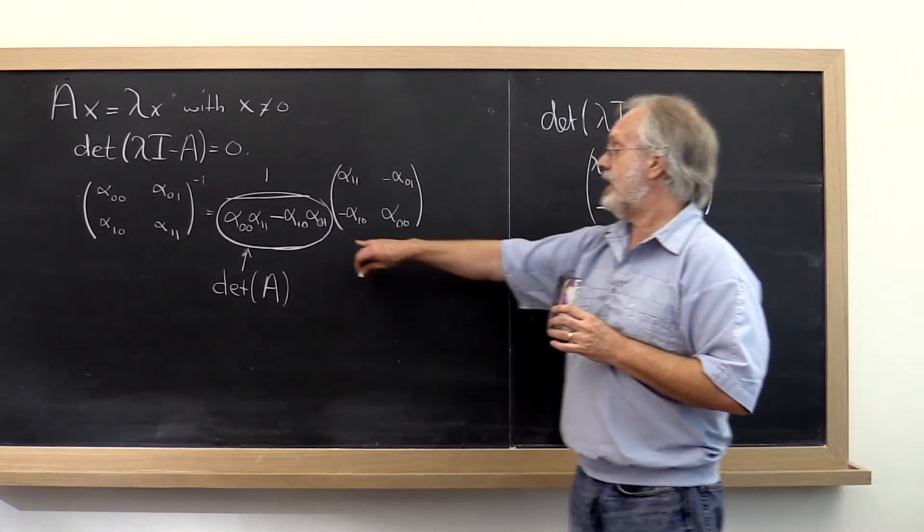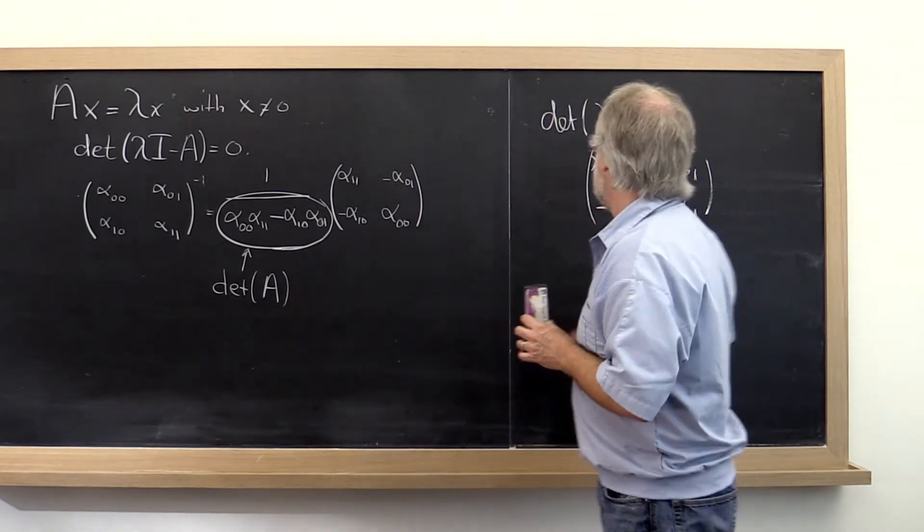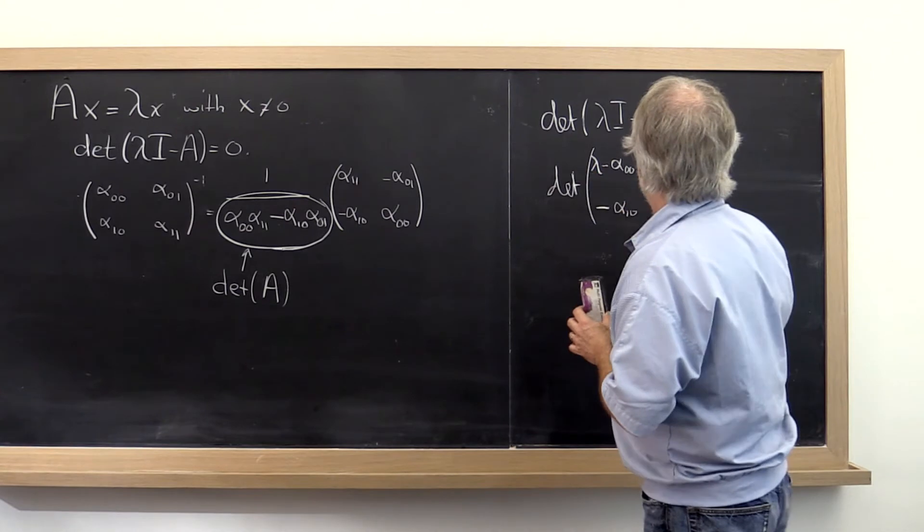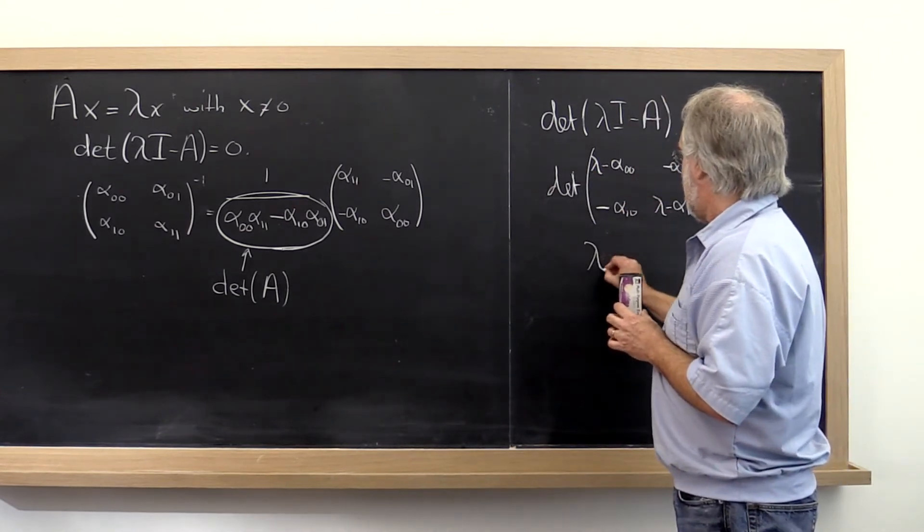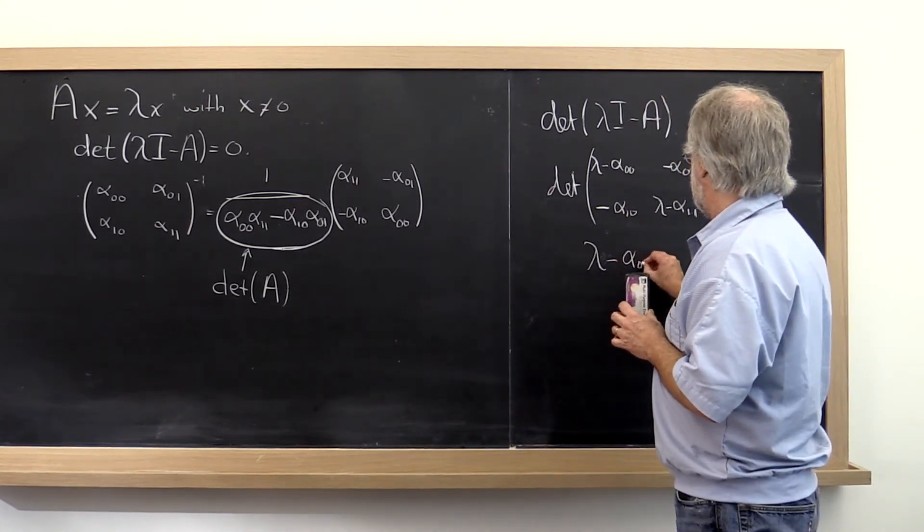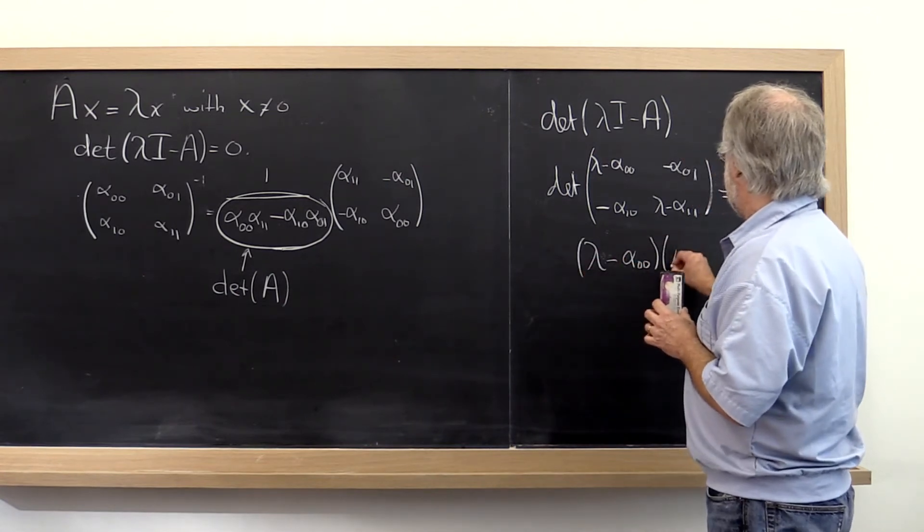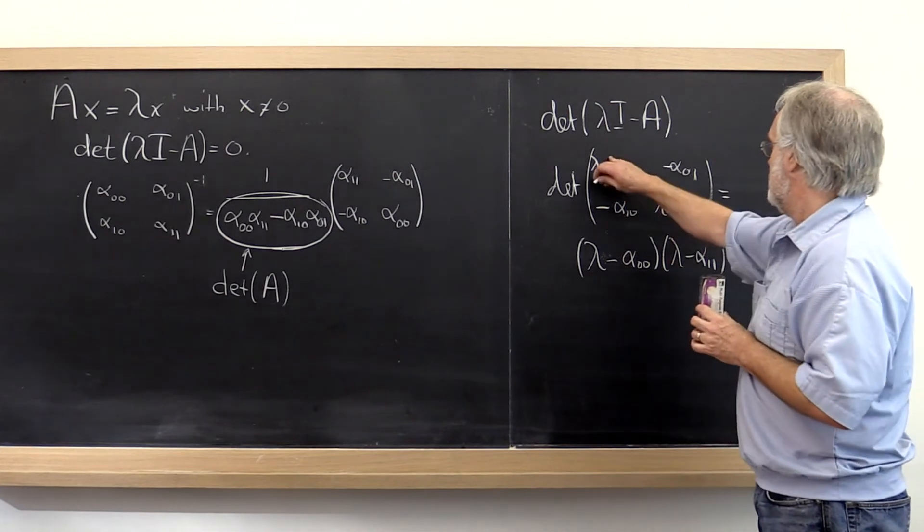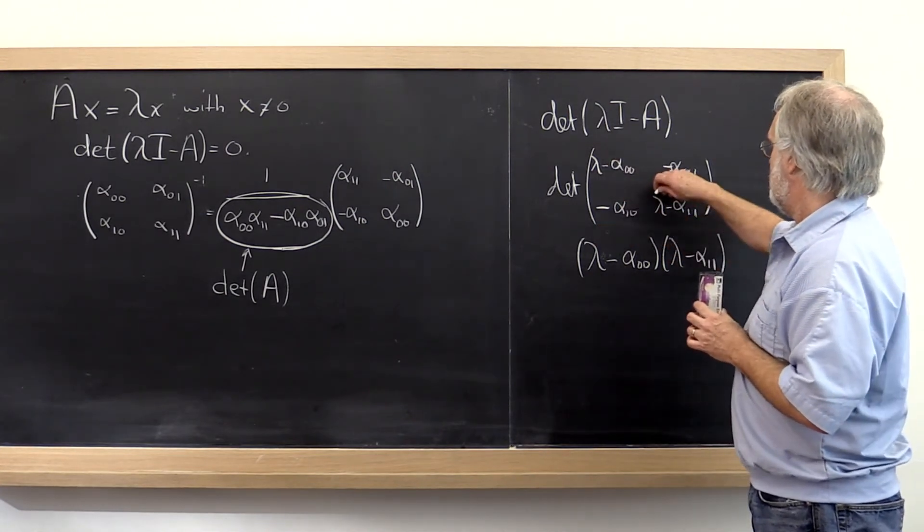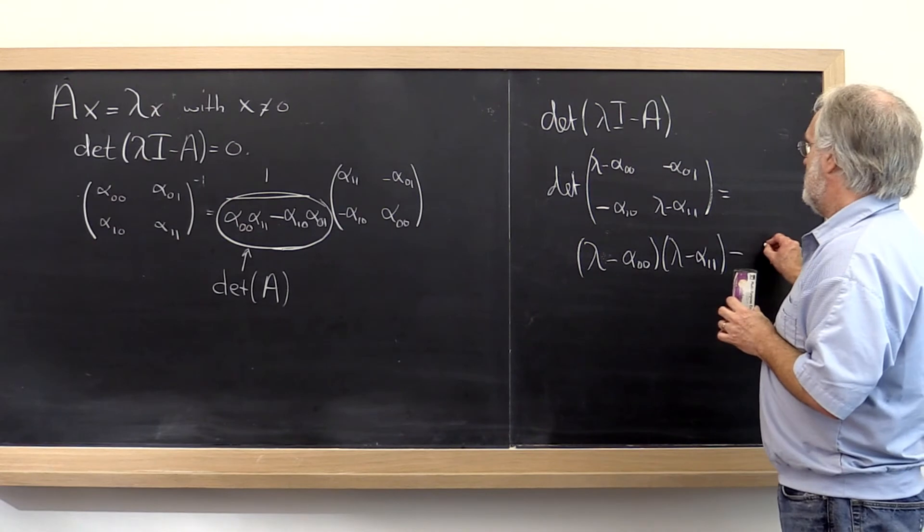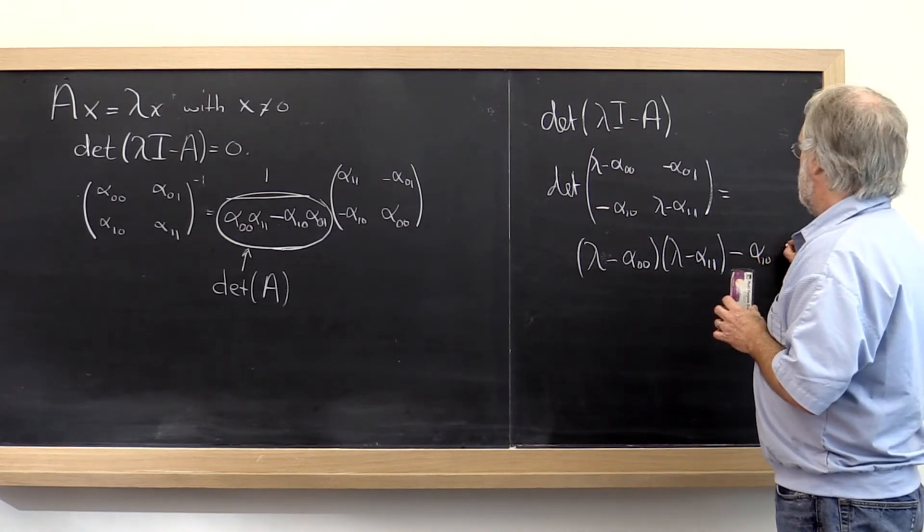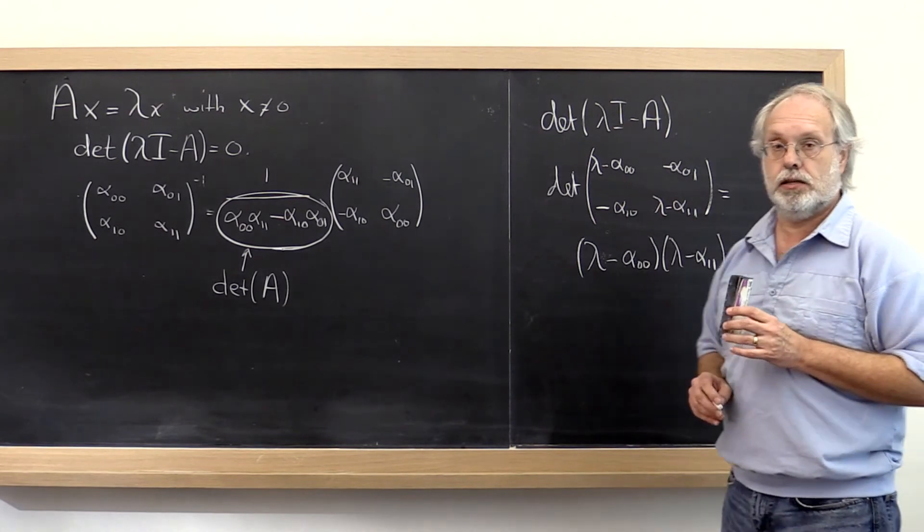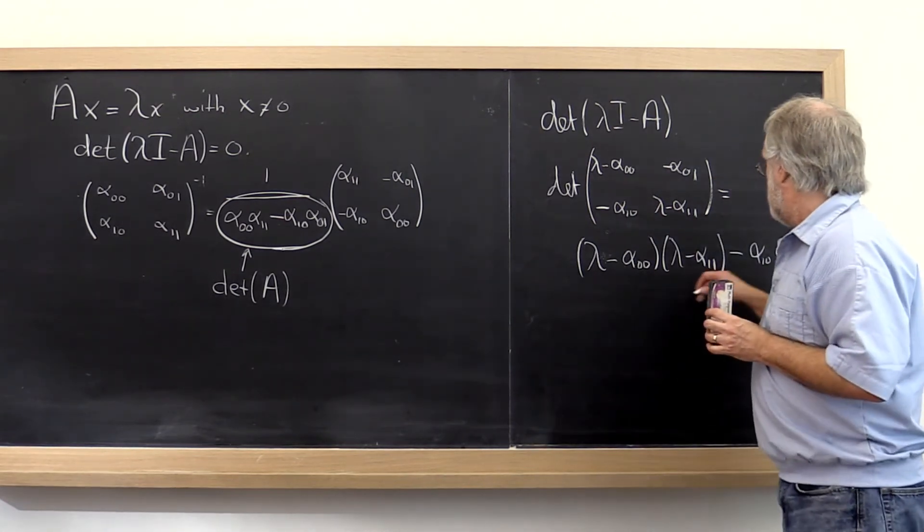And then if we apply the formula for the determinant to this matrix, what we get is lambda minus alpha 0,0 times lambda minus alpha 1,1, that's this times that, minus this times that, minus alpha 1,0 times alpha 0,1, because these two minus signs cancel each other.